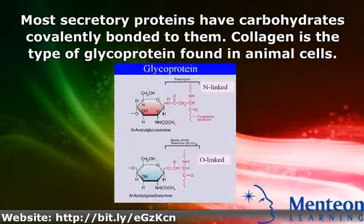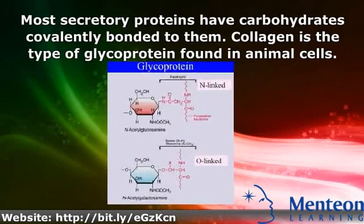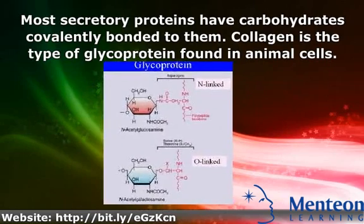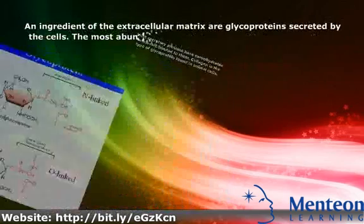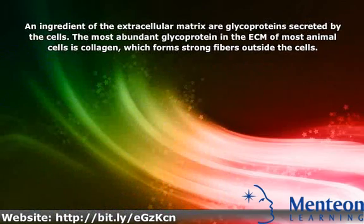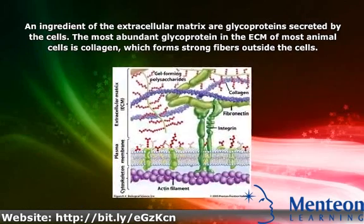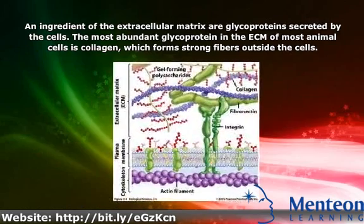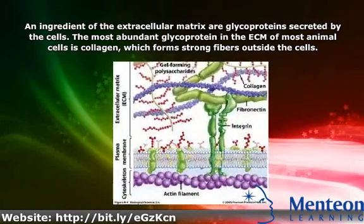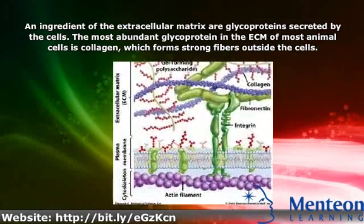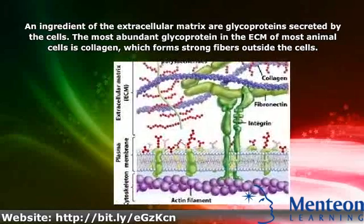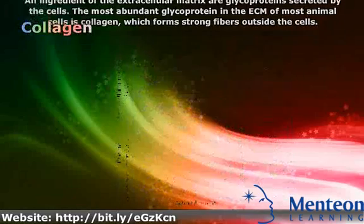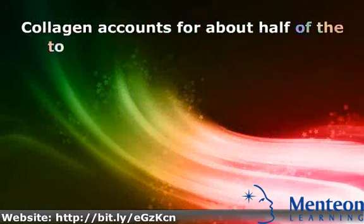Collagen is the type of glycoprotein found in animal cells, an ingredient of the extracellular matrix — a glycoprotein secreted by the cells. The most abundant glycoprotein in the ECM of most animal cells is collagen, which forms strong fibers outside the cells.